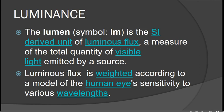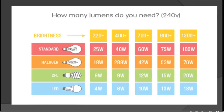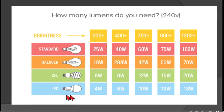Talking about lamps and brightness: the lumen is the unit for luminous flux, a measure of the total quantity of visible light emitted by a source. Luminous flux is weighted according to the model of human sensitivity to various wavelengths. A diagram shows how many lumens you need, ranging from 220+ to 1300+ lumens. For example, if you need 700 lumens and want to be energy efficient, you would use a 10-watt LED bulb.